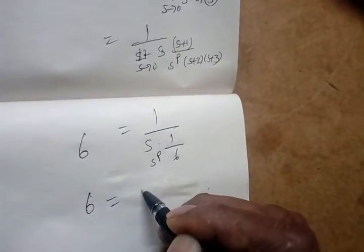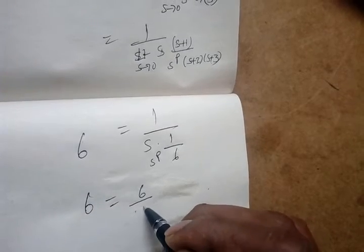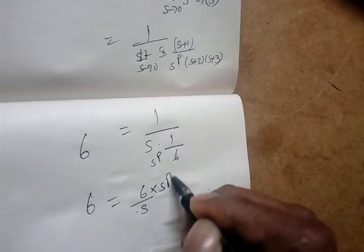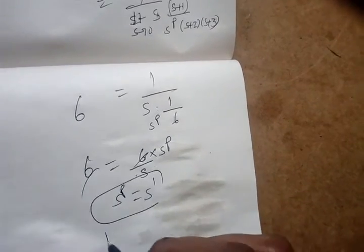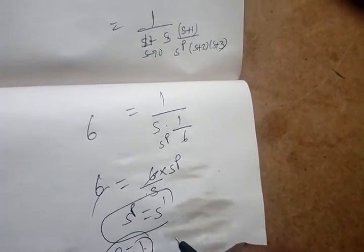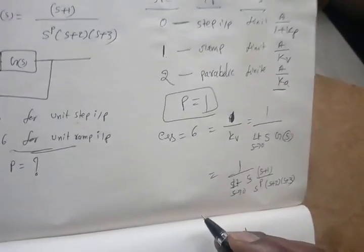Now, how to cancel S and S? When I substitute 0, this is 1, this is 2 into 3. So what I will get? 1 by S into 1 by 6 into S to the power P, which is equal to 6. So 6 is equal to 6 by S into S power P. So 6, 6 cancel, so S power P is equal to S power 1. So from this also, I can say P is equal to 1. So this is how to do this problem.